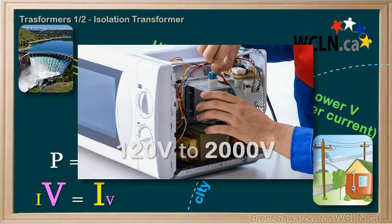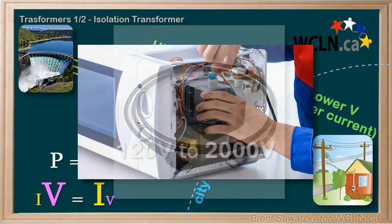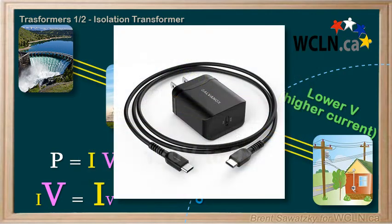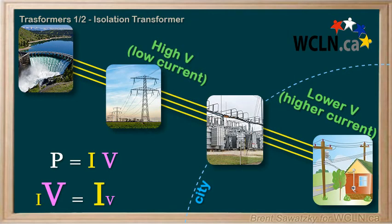So you need to step up the voltage for that one. And also, charging your phone only requires, say, 9 volts. So you need to step down the voltage for that. So as you can see, a big part of electrical power transmission and regular daily use of electricity requires transformers.